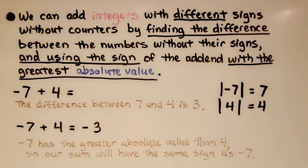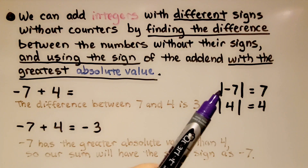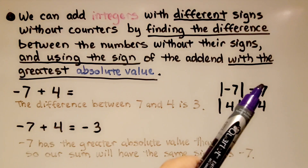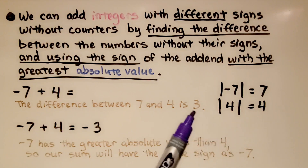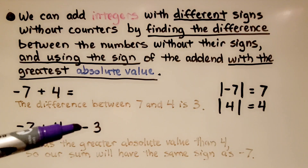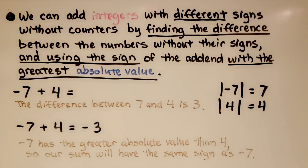We can add integers with different signs without counters by finding the difference between the numbers without their signs and using the sign of the addend with the greatest absolute value. For negative seven plus four: the absolute value of negative seven is seven and the absolute value of four is four. The difference between seven and four is three. Negative seven has the greater absolute value, so our sum has the same sign as negative seven — the sum is negative three.